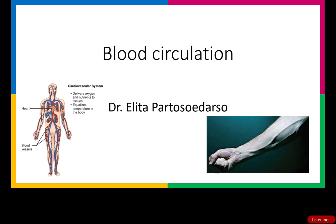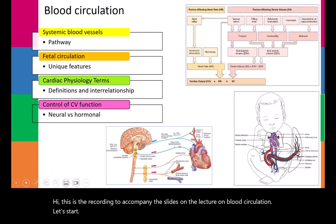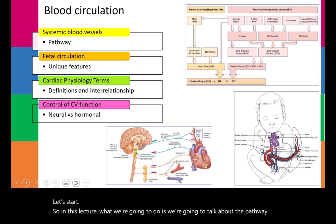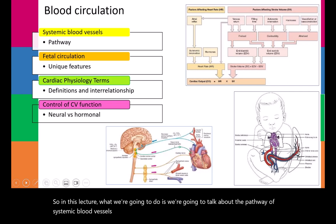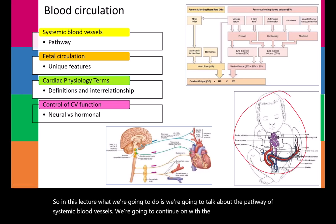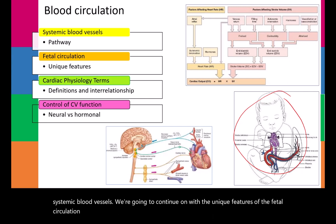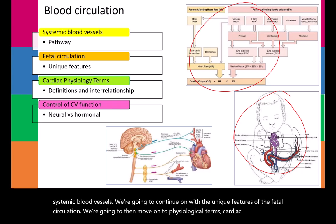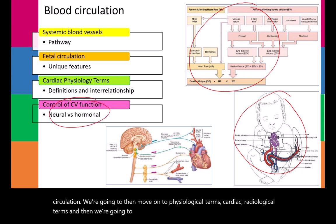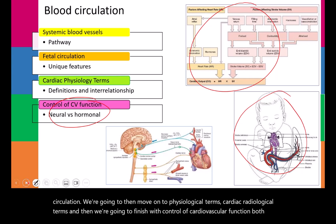This is the recording to accompany the slides on the lecture on blood circulation. In this lecture, we're going to talk about the pathway of systemic blood vessels, continue on with the unique features of the fetal circulation, move on to cardiac physiological terms, and then finish with control of cardiovascular function, both neural and hormonal.